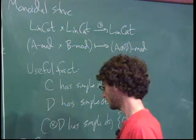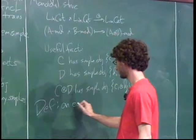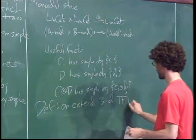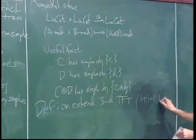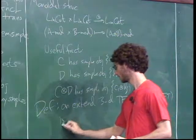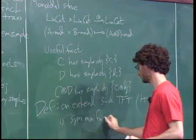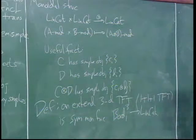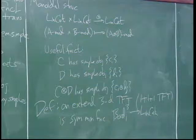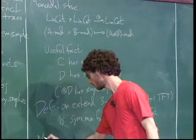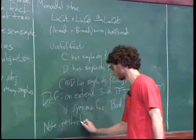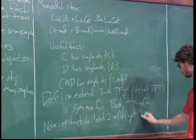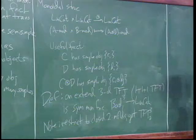With all that in place, we can define an extended 3D TFT — also sometimes called a 1+1+1 dimensional TFT — as a symmetric monoidal functor from Board 1-3 into linear categories. If you restrict such a thing to closed 2-manifolds, you get an ordinary 2+1 dimensional TFT.